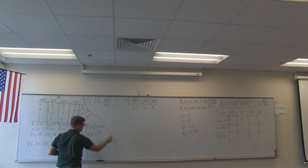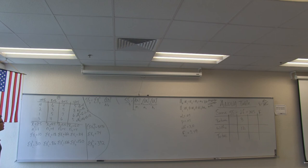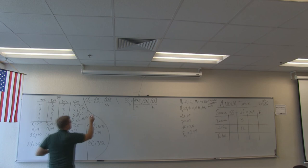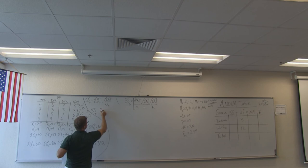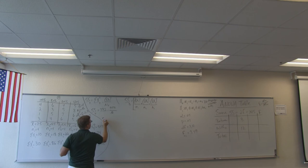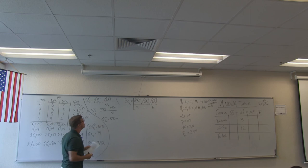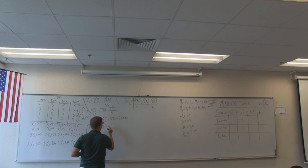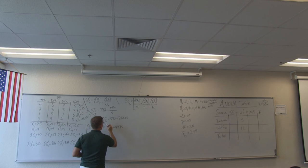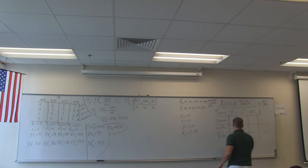SST is sum X squared sub T minus (sum X sub T)² divided by capital N sub T. That is 392 minus 5,476 divided by 16. 5,476 divided by 16 is 342.25. Sum of squares total equals 392 minus 342.25, which is 49.75. SST = 49.75.